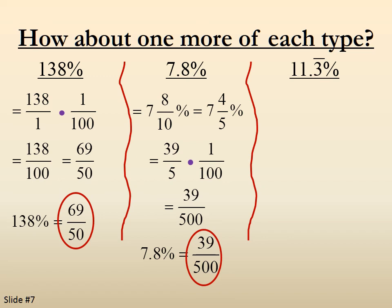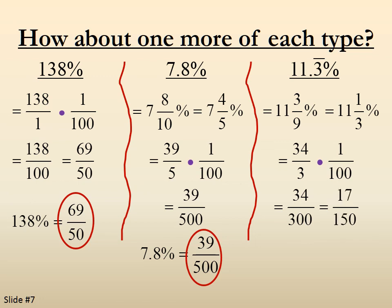And finally, 11.3 repeating percent. So 11 and 3 ninths. Now 3 ninths can be reduced, so 11 and 1 third, which gives us 34 over 3 times the 1 over 100, gives us 34 over 300, which reduces to 17 over 150. So 11.3 repeating percent is 17 over 150.